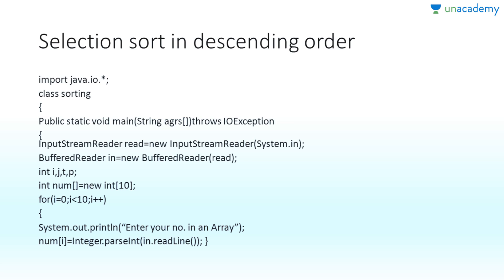In selection sort, you take the first element and compare it with the last element. You compare all the way to the last element. If you want ascending or descending order, you keep track of the smallest or largest value, then swap and repeat the same process for the next position.